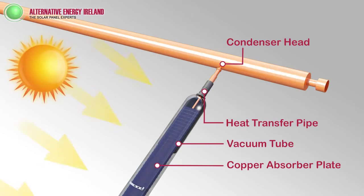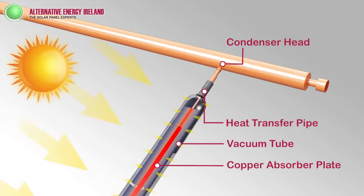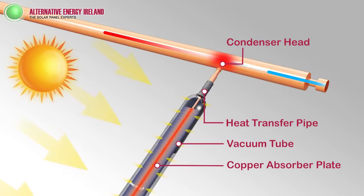When daylight strikes the copper absorber plate, its temperature rises dramatically due to the patented coating. The heat naturally rises up the tube and gathers at the condenser.